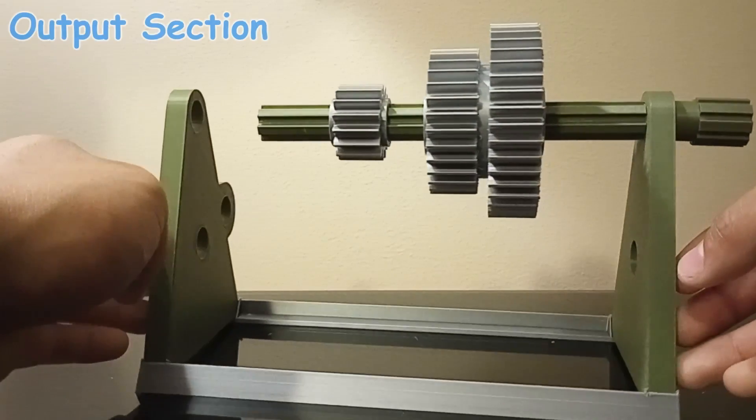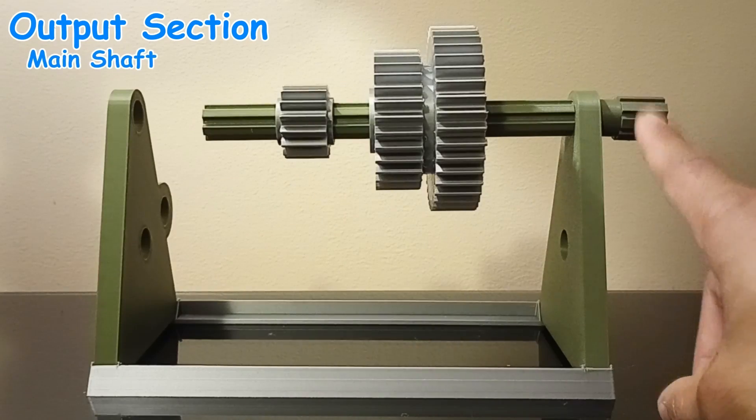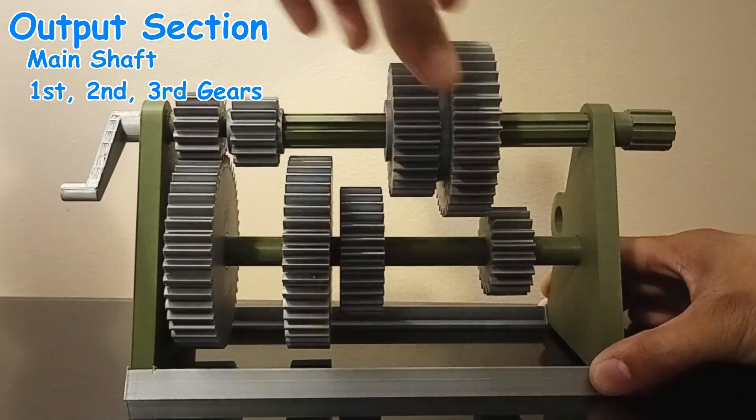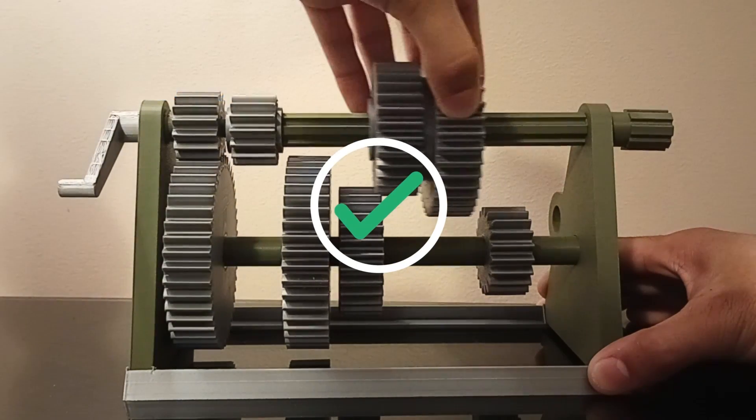Back up above is the output section consisting of the main shaft, then first, second, and third gear. As opposed to the counter gears, these gears can move from side to side.